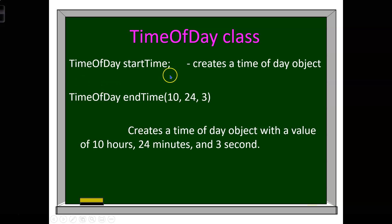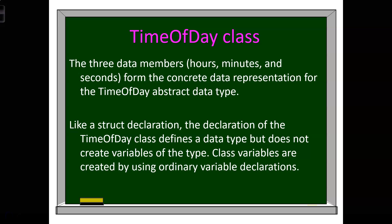Here we're declaring start_time as a TimeOfDay object, and here we're creating a second one, end_time, as a TimeOfDay object that is initially set with hours at 10, 24 minutes, and 3 seconds. Like a struct declaration, a declaration of the TimeOfDay class defines a data type but does not create variables of the type. Class variables are created by using ordinary variable declarations — for example, we would write TimeOfDay time_one.